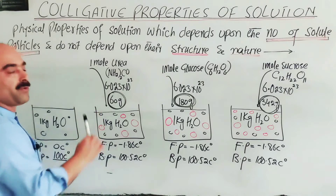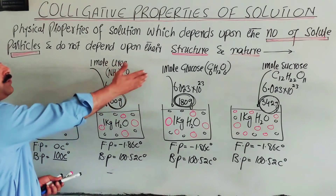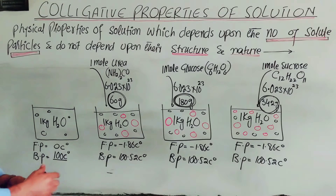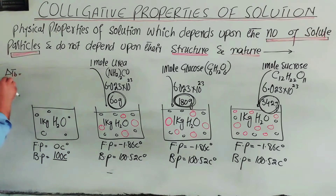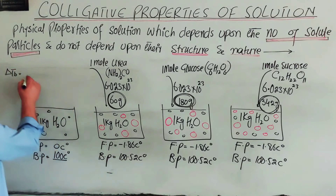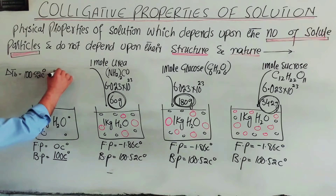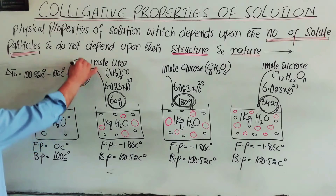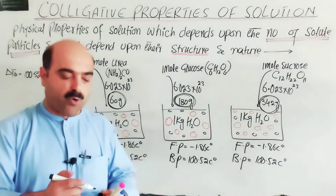The same number of solute particles produces the same elevation in boiling point regardless of whether it is glucose, urea, or sucrose — this is why these are called colligative properties. Delta Tb represents the change in boiling point. The solution boiling point is 100.52°C and water is 100°C, so the change is 0.52 degrees C. This elevation of 0.52°C is the molal boiling point elevation constant.